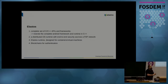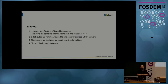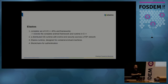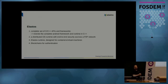Elastos is an operating system that attempts to address this problem. It's a complete set of C and C++ APIs and frameworks. They even rewrote the complete Android framework and runtime in C++ so you can build applications in C++, Java, or any scripting language and take advantage of the features the operating system provides. It's a distributed OS runtime with end-to-end security across a peer-to-peer network, built for containers and virtual machines, and it uses blockchain for authentication.